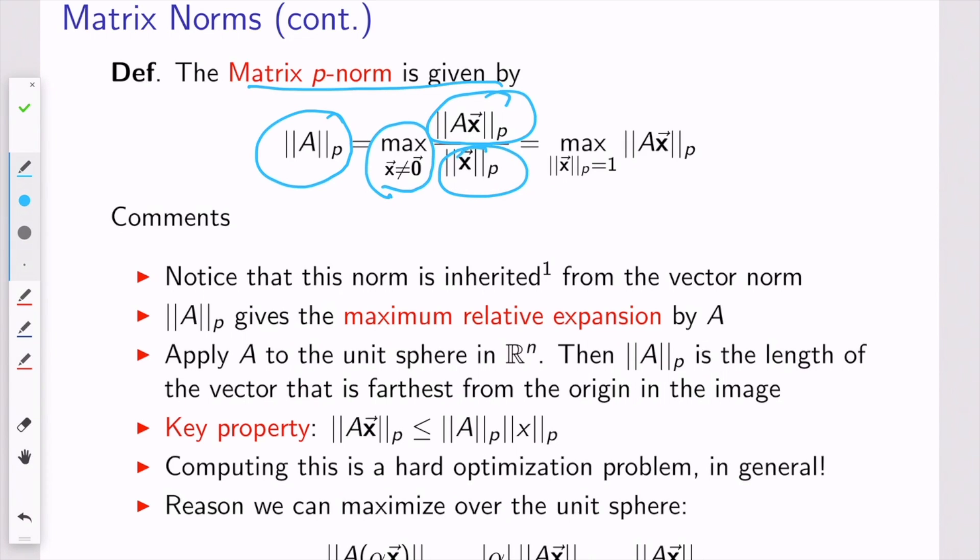So let me say that again. You pick a vector x, you multiply it by A, that gives you a vector in the numerator here, and you take its p-norm. You take that same vector x, you calculate its p-norm, its vector p-norm, that's the denominator. You divide them, and that's a candidate value for the p-norm of the matrix, but you have to repeat that process for every possible non-zero vector, and then you take the largest answer, and that's the matrix p-norm.